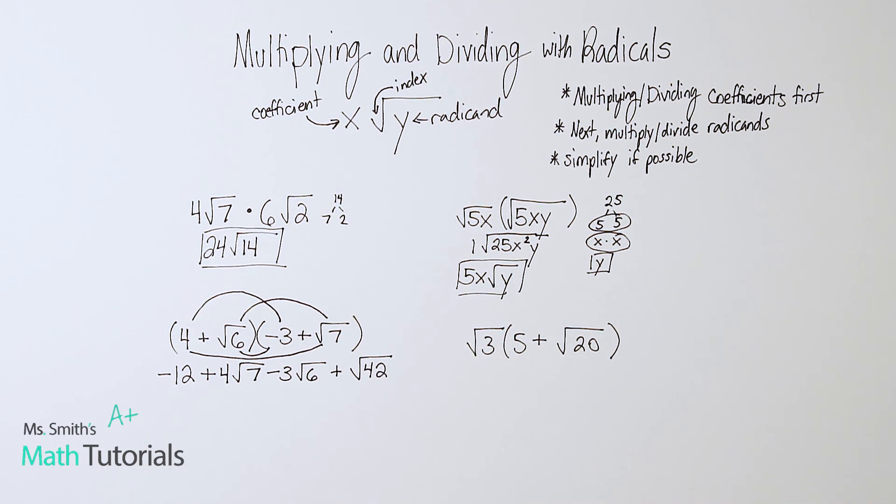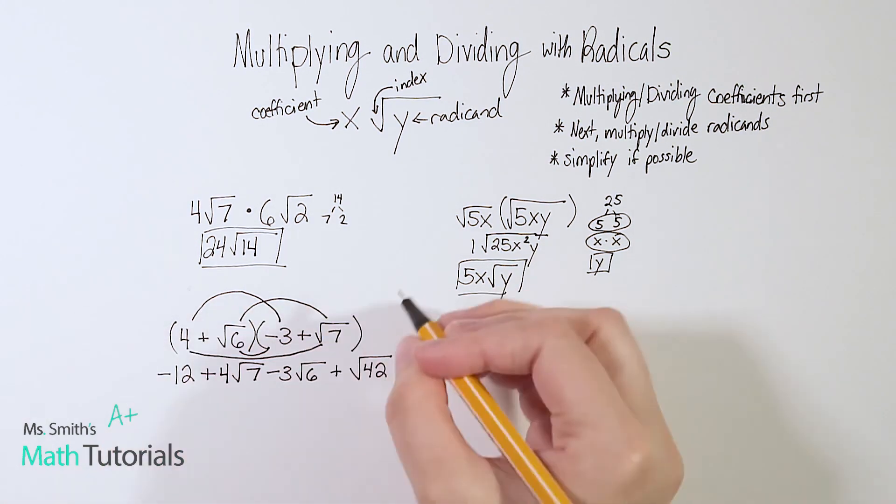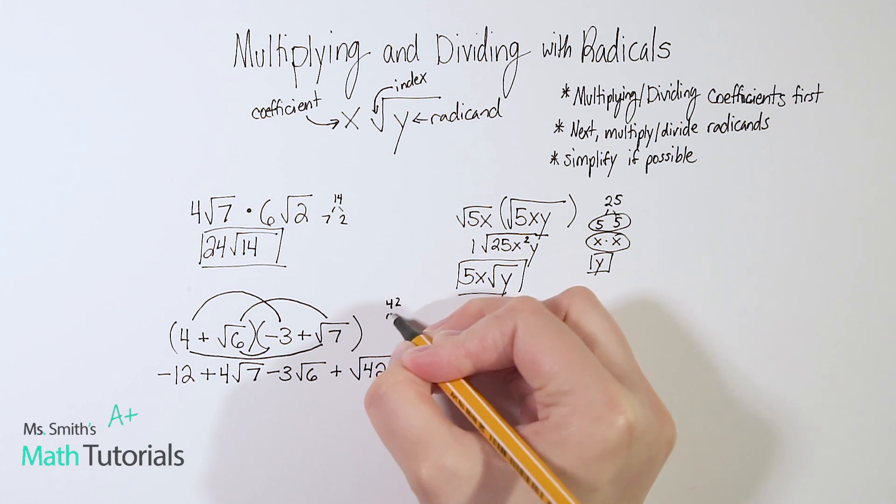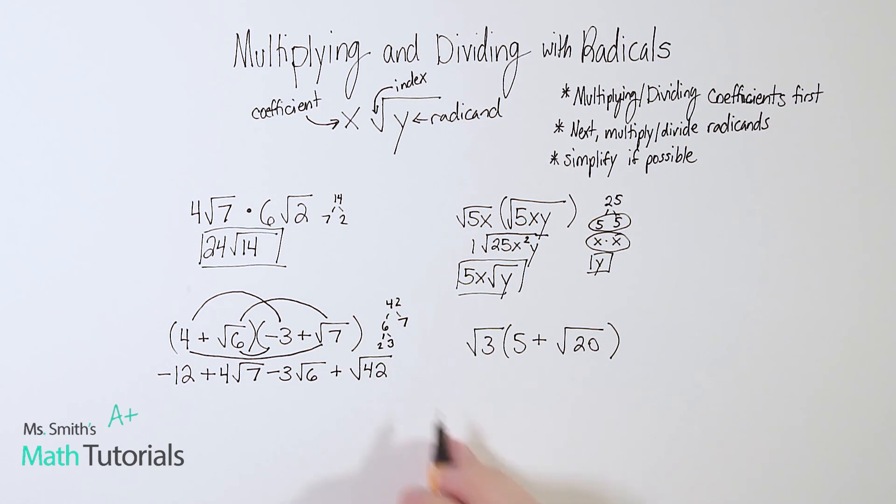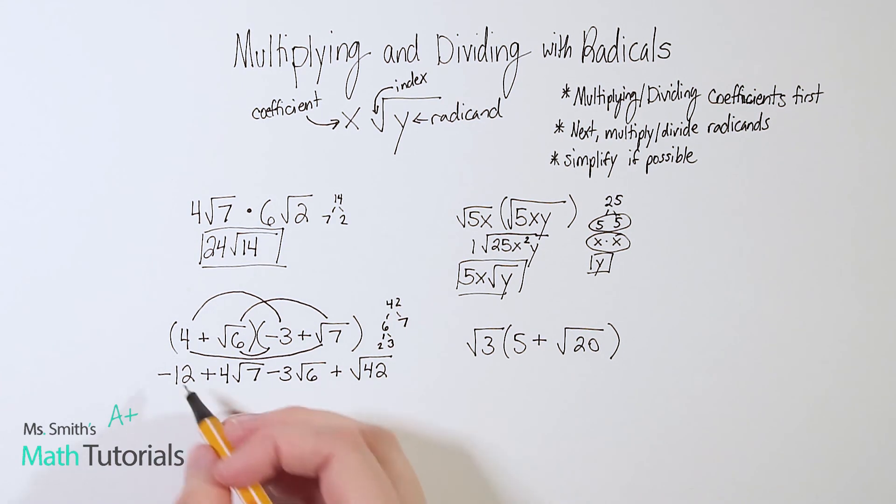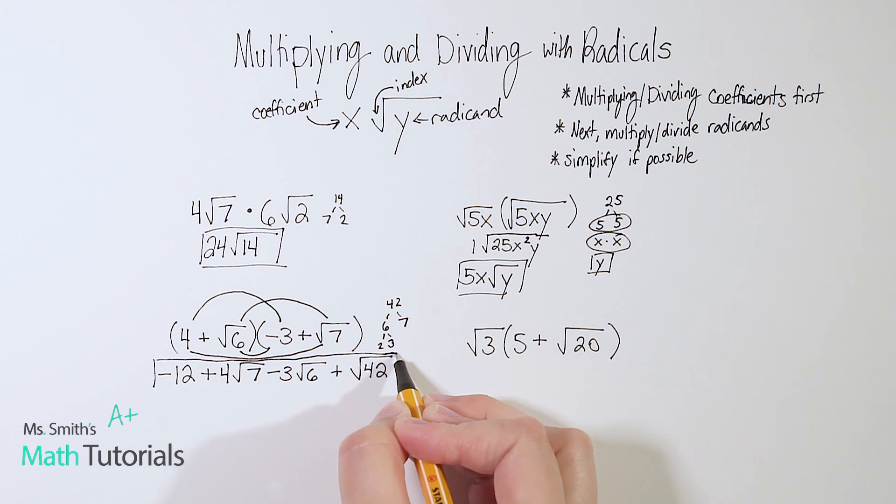So now I would want to go ahead and reduce anything that I can. I can't reduce negative 12, that's just a constant. I can't reduce a radical of 7. I can't reduce a radical of 6. Those are already simplified as far as they go. 42, we could try. We could over on the side here do 42. I know 6 and 7, and then 6 breaks down to 2 and 3. I now have all dead ends and no pairs. So that tells me that's actually as low as that goes. There's no like term, so it's kind of long and that's okay. It's as simplified as it gets.